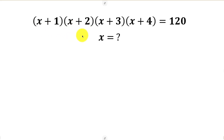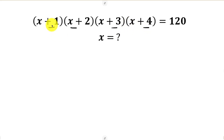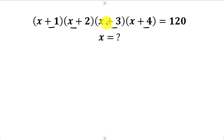We consider the first two terms and then the second two terms. For the first two terms, 1 plus 2 is 3, and 3 plus 4 is 7, so they don't have anything in common. Let me combine the first and third terms: 1 plus 3 is 4. And combining the second and last term: 2 plus 4 is 6. They don't have anything in common either. Now comparing the first and last terms: 1 plus 4 is 5, and 2 plus 3 is also 5, so we have something in common — 5.